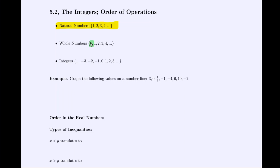We would call whole numbers all the non-negative integers: 0, 1, 2, 3, and continuing on. If we want to reference all the integers — whether positive, negative, or zero — we just call it 'the integers,' which includes all the negative integers, zero, and all the positive integers.